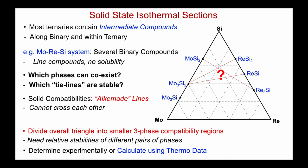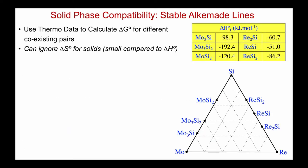Staying with the Mo-Re-Si system, there is in fact a whole set of enthalpy of formation data for all of the silicides within this ternary system, and the enthalpies of formation are shown here. When calculating stabilities, we should really use free energy, but the difference in entropies of solids is usually pretty small, so as a first approximation we can use the enthalpy data to figure out what the stable pair of phases will be. So let's systematically calculate the possible stable reaction equilibria to see what phases are stable.